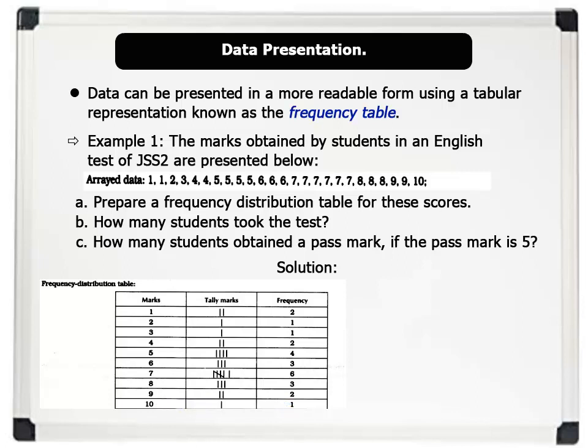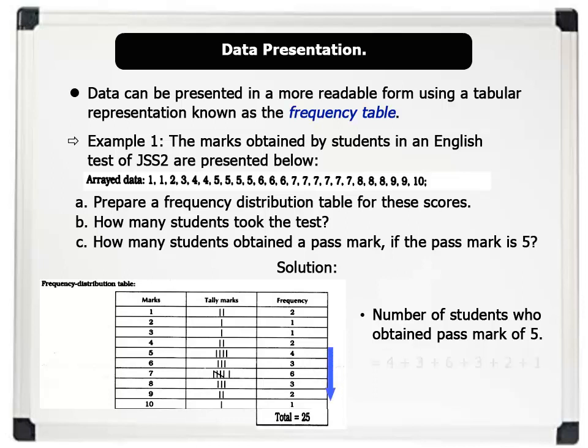Total number of students that took the test equals 25. To find the number of students who obtained the pass mark of 5, we simply add up the number of students who scored 5 and above, which equals 19 students.